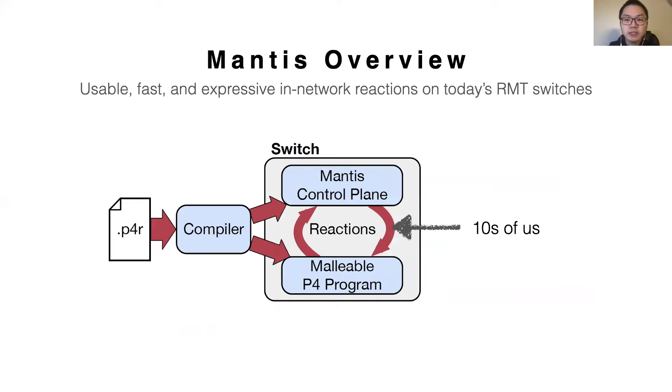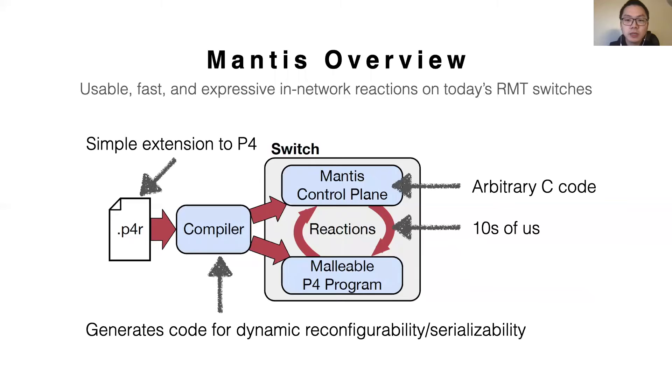At the center of Mantis is a reaction loop, where the Mantis control plane pulls measurements and updates portions of the data plane at a granularity of tens of microseconds. The reaction logic in the control plane can be any arbitrary C code. Specifying this behavior is the P4R language, a simple extension to P4 that enables users to specify which portions of a P4 program should be malleable and to define the reaction logic.